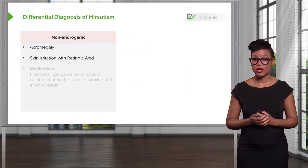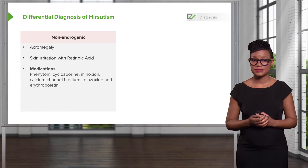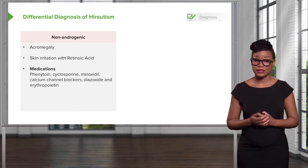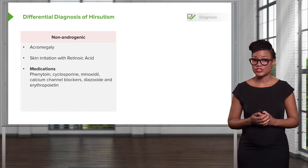You can also have hirsutism with skin irritation, such as with the application of retinoic acid. Certain medications can also lead to hirsutism, including cyclosporine, phenytoin, minoxidil, calcium channel blockers, and other medications listed here.